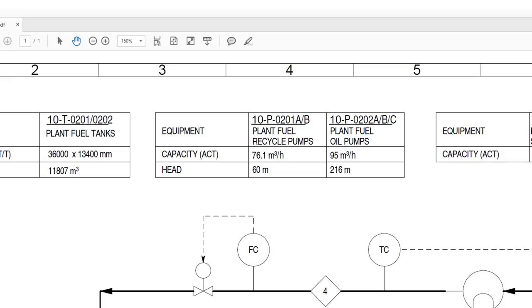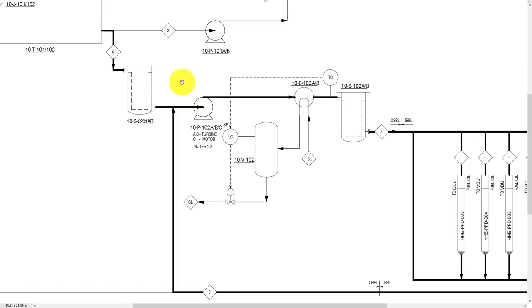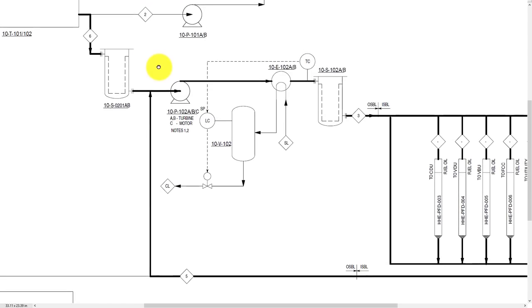See this detail of the pump. Recycle pump has a head of 60 meters and the plant fuel oil has a head of 216 meters. This must be a huge pump. Let's look where they are on the PFD.